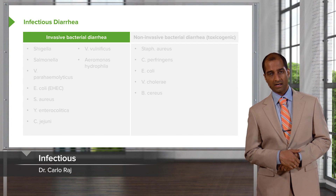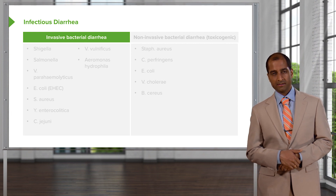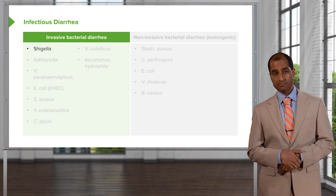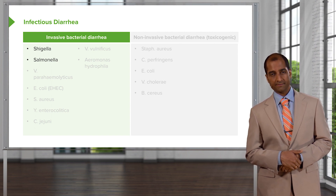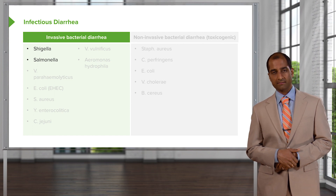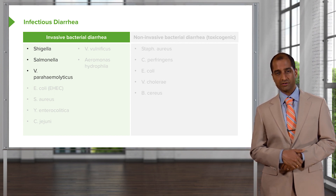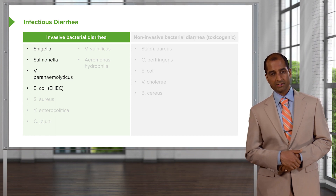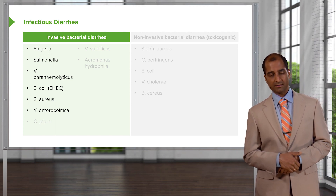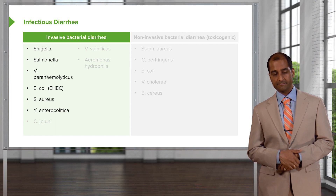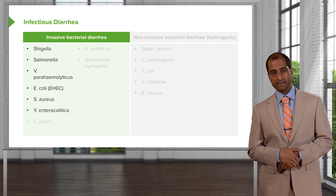Our next topic is infectious diarrhea — specifically invasive bacterial diarrhea. I'll list the organisms with brief explanations. Shigella is quite common as an invasive bacteria. Salmonella has different species that may result in types of diarrhea. Vibrio parahemolyticus is associated with shellfish. E. coli hemorrhagic, Staph aureus — extremely quick within six hours of consuming foods like potato salads. Yersinia enterocolitica can simulate right lower quadrant pain, mimicking appendicitis.